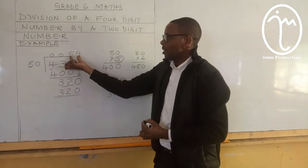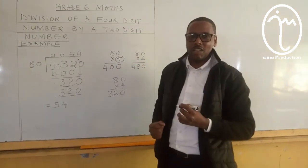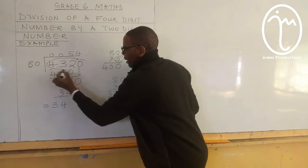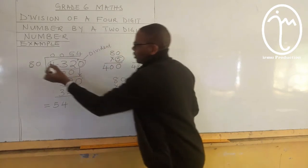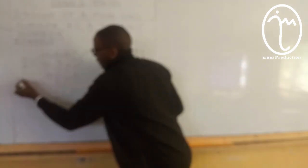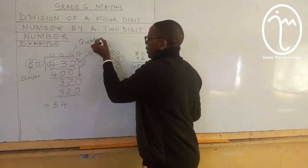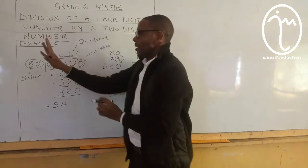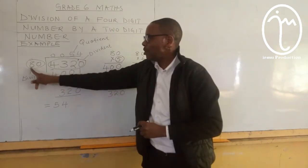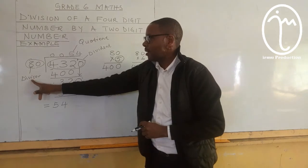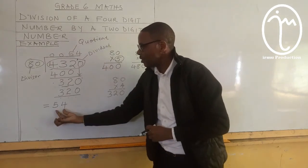So now our answer — we are not going to say these zeros — our answer is 54. Remember, this is called the dividend, this is called the divisor, and this is called the quotient. So, this answer we have got here is our quotient. The number that we use to divide is our divisor, and this is the dividend. So, our answer — the quotient — is 54.